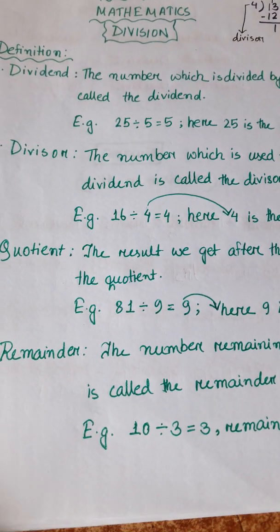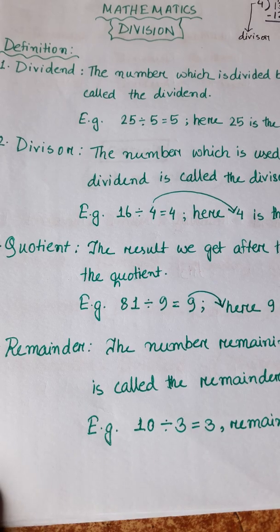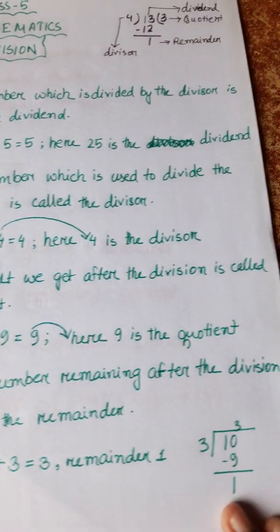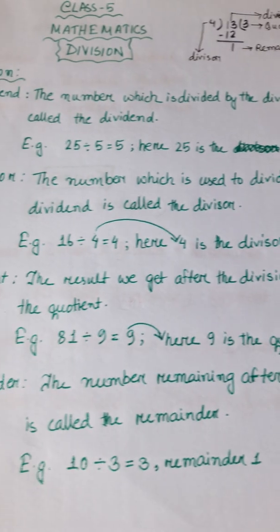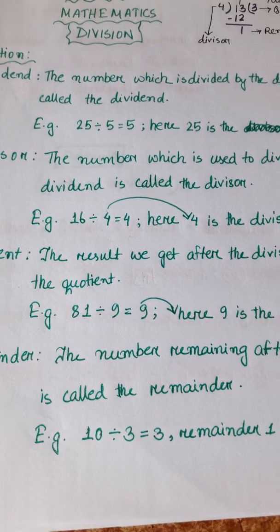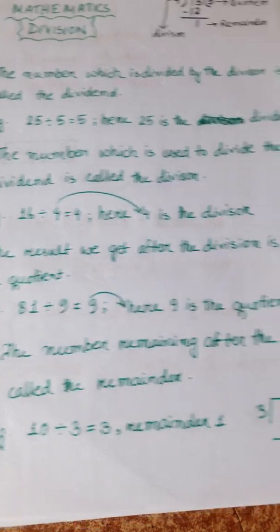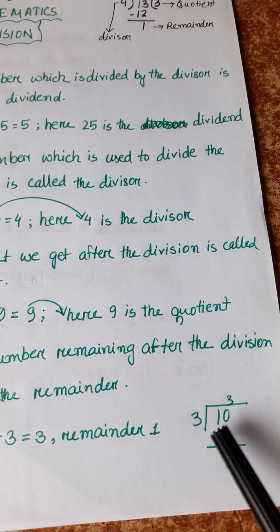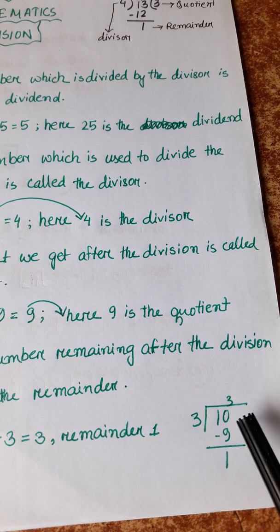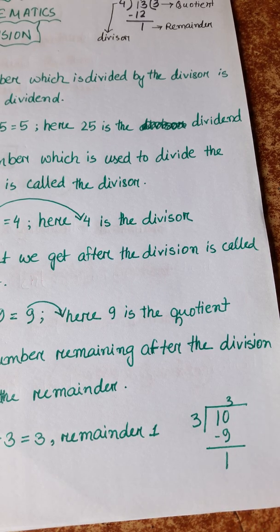Number 4: Remainder. The amount remaining after the division is called the remainder.